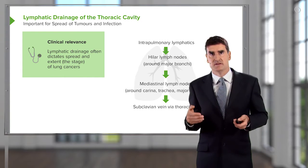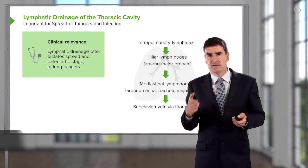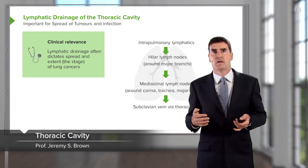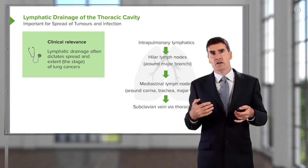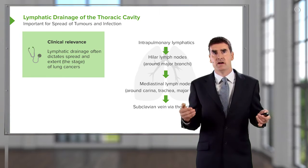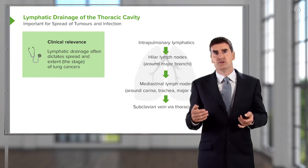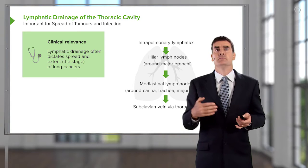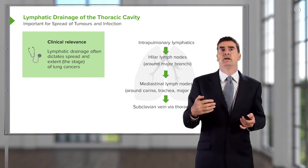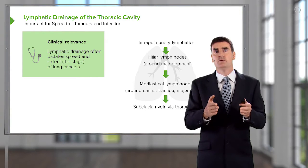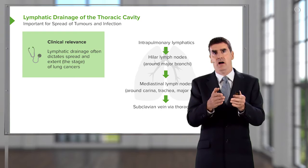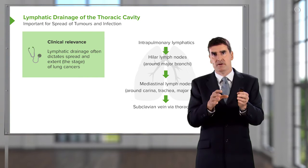Lymphatic drainage of the thoracic cavity is important because this is how lung cancers and lung infections spread. There are lymphatics which drain most of the lung parenchyma, the airways, and the visceral pleura. The drainage pattern is essentially similar to the pulmonary venous drainage pattern — they go up through the circulation to the hilum, where there are hilar lymph nodes.